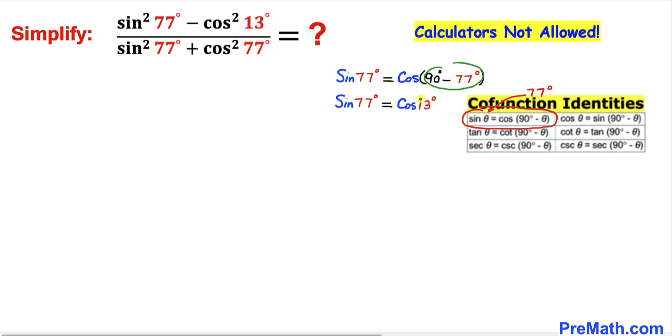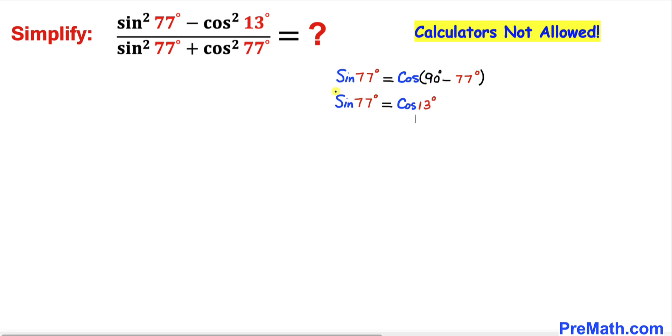90 degrees minus 77 degrees is going to give us 13 degrees. Now let me go ahead and take a square on both sides. Therefore we can write sine square of 77 degrees equal to cosine square of 13 degrees.